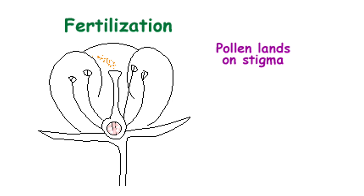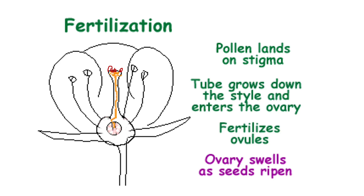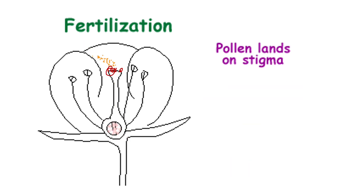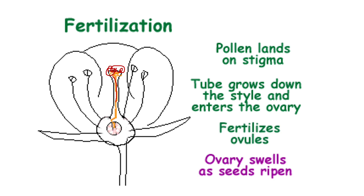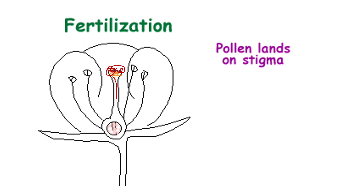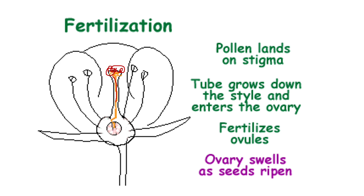Once the pollen grains are dropped on the stigma, they stick over there because the stigma has a sticky substance on its tip. When the pollen grains are dropped on the tip of the stigma, the pollen starts giving out a tube — you can see the yellow-colored tube here. This pollen tube grows deeper inside the ovary. This does not happen in one or two days; it takes around 15 to 20 days, even up to one or one and a half months for the pollen tube to fully reach the ovary.